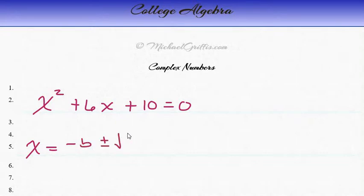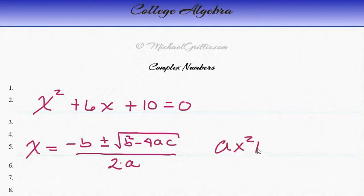b squared minus 4ac, and it's all over 2a. Okay, now remember that ax squared plus bx plus c is that general form, so we know where our a's and our b's and our c's are coming from.